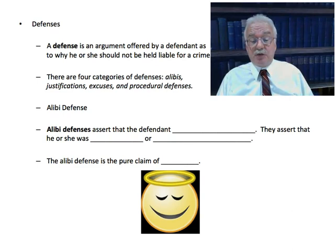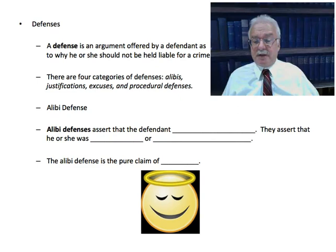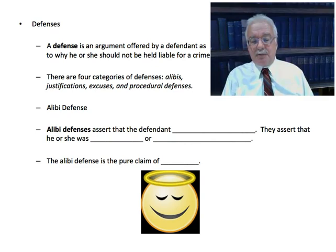Let's first talk about the alibi defense. An alibi defense asserts that the defendant didn't do it — that he or she was not there, or if there, didn't do it. So the alibi defense is a pure claim of innocence.